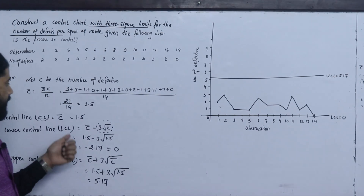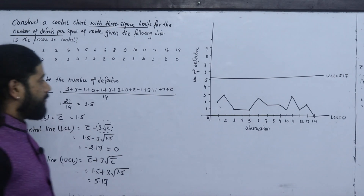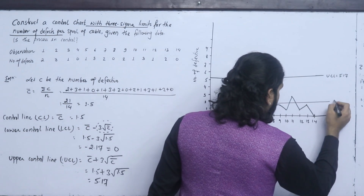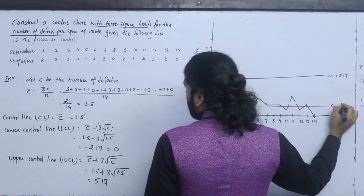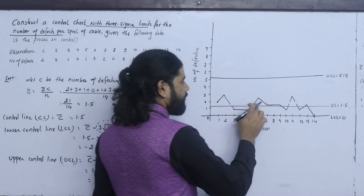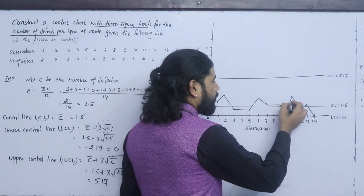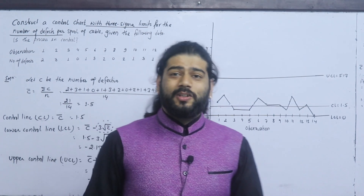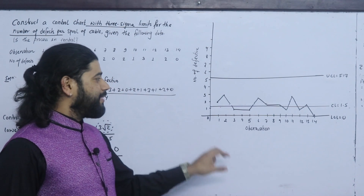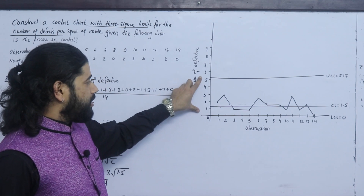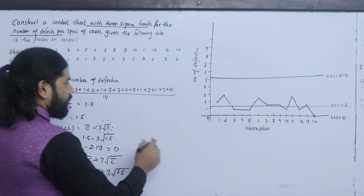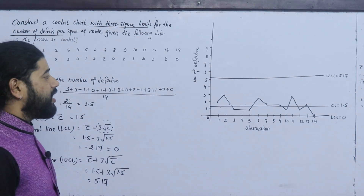So we have to use the control line at 1.5. Using process control, all the numbers of defectives are within the control limits. The process is under control. This is the C chart method.